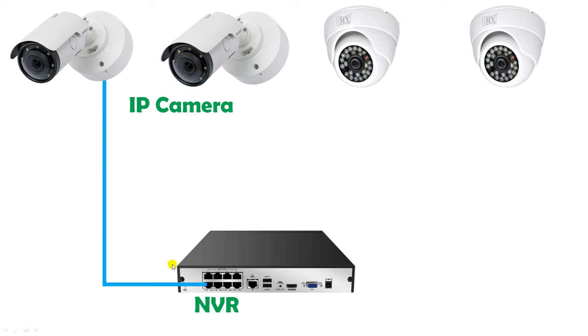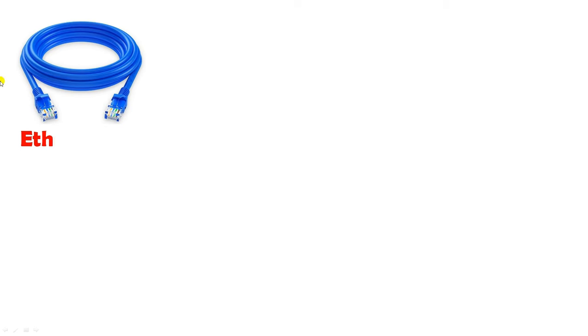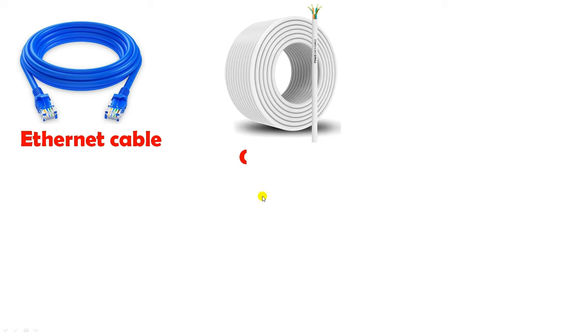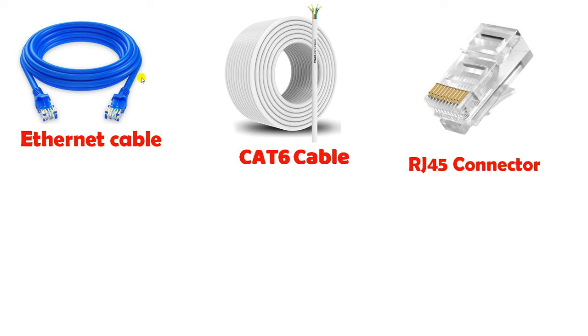Now understand one more thing — the cable which we use here, what type of cable is this? This cable you can see here is known as an ethernet cable and we use this cable for connection of the IP camera. If you don't want to use this cable, then Cat6 cable can also be used. With this cable you can see an RJ45 connector is already connected, and similarly at the other end of the cable we will connect an RJ45 connector.